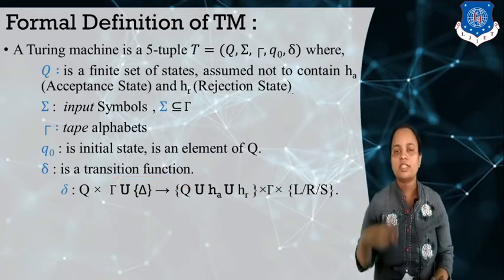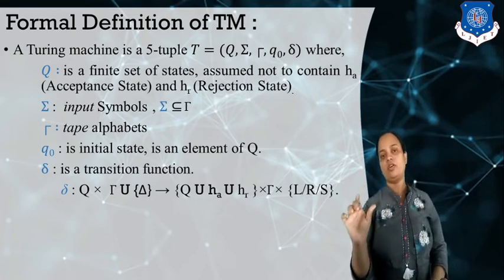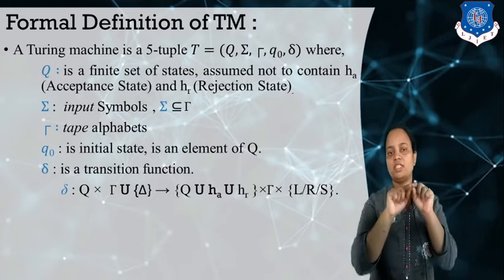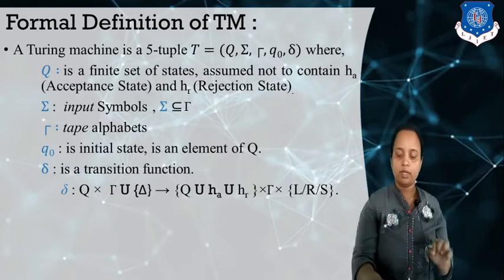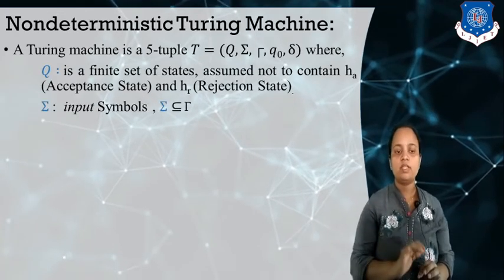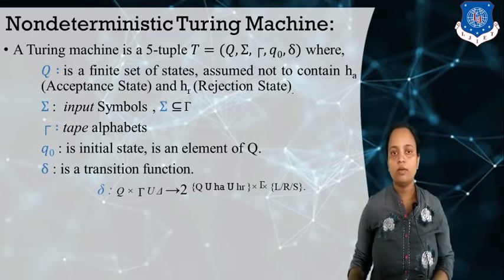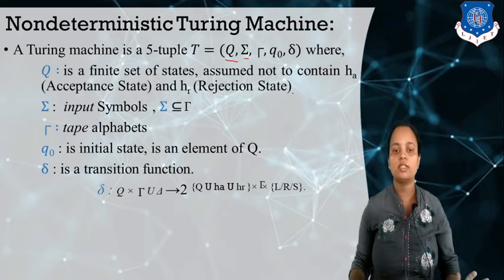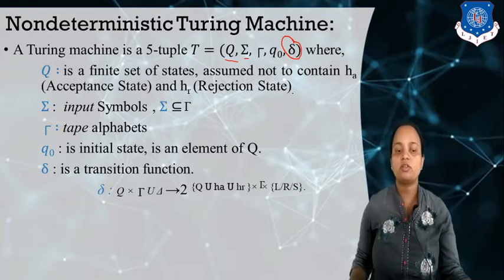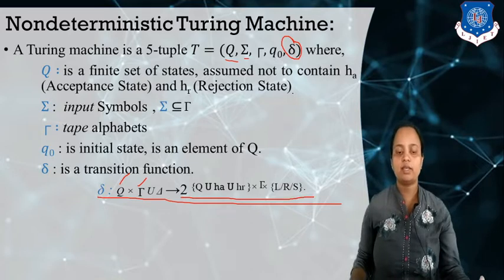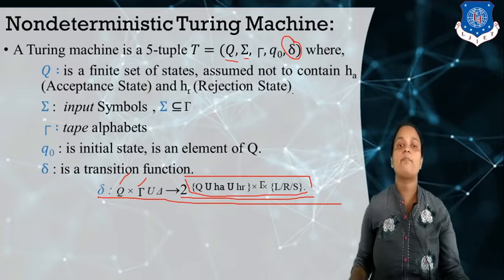In a non-deterministic Turing machine, the difference from the deterministic is defined in the transition function — how it transitions for a given state and given input. If it is deterministic, for the current state and given input, it moves to only one state. But in a non-deterministic Turing machine, the transition function is defined differently. All the remaining components like Q for states, sigma for input alphabet, are the same. The key difference is in the transition function.